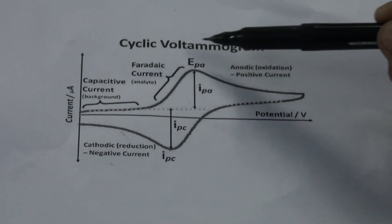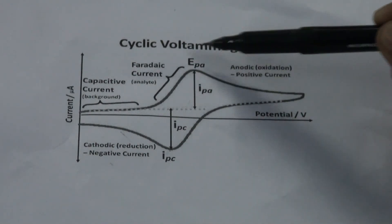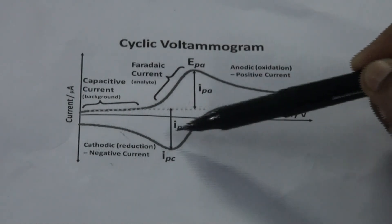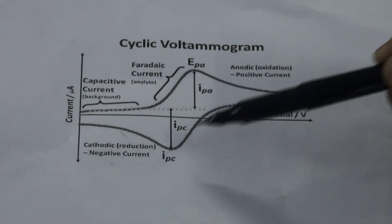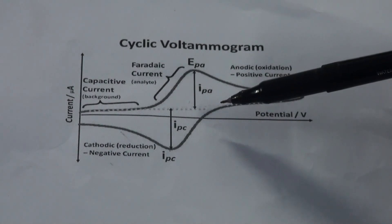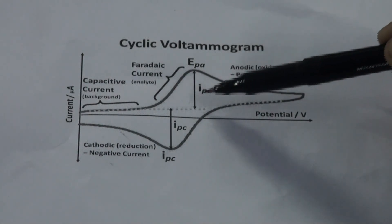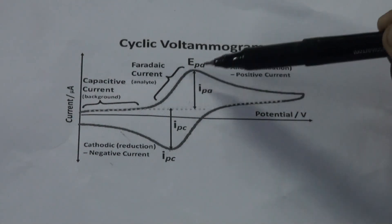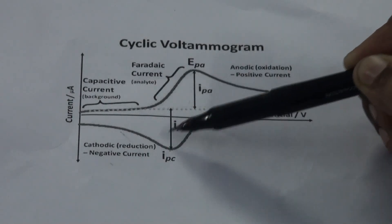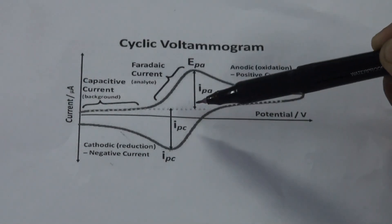The difference between the peak potentials—the anodic peak potential and the cathodic peak potential—should be equal to 59 mV. Similarly, the ratio of the anodic peak current values and the cathodic peak current values should be equal to 1.